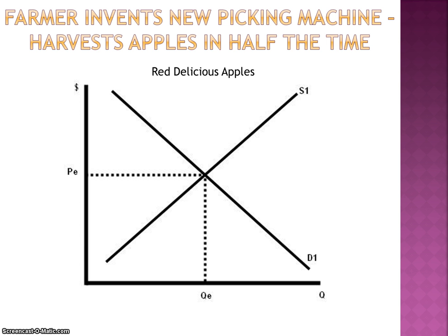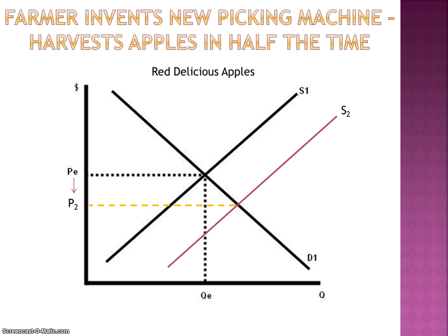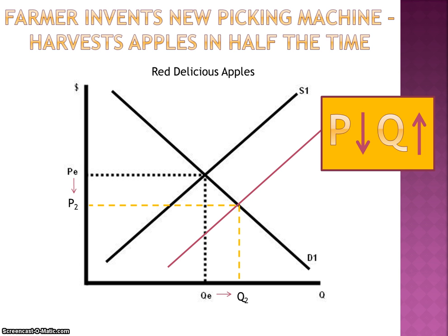If a farmer invents a new apple picking machine which harvests apples in half the time, that's an advancement in technology which will cause an increase in supply. Once supply increases, we know price will be driven down and the equilibrium quantity will rise for red delicious apples.